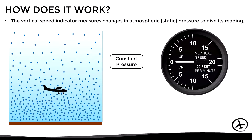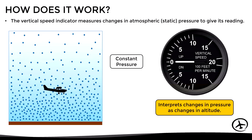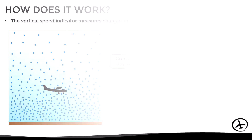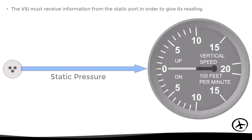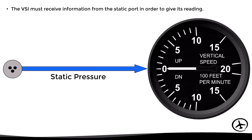In general terms, the VSI interprets changes in pressure as changes in altitude, and measuring how fast the pressure is changing is how it can determine the rate of climb or descent. That is why it is necessary that the instrument receives static pressure information from the static port.